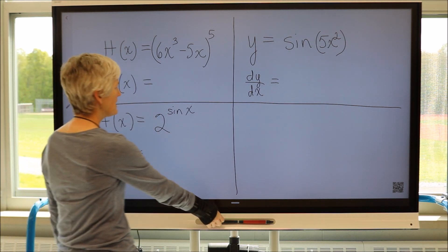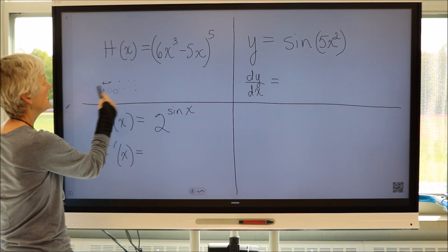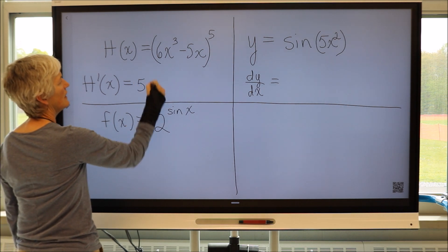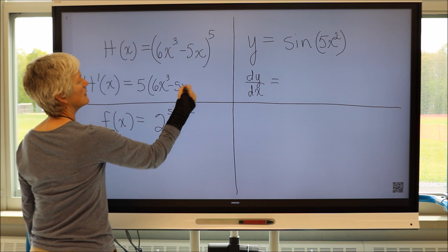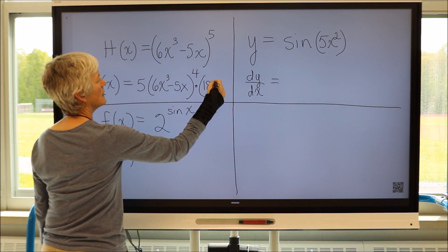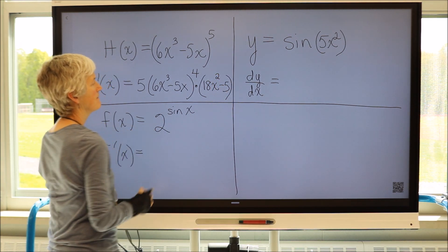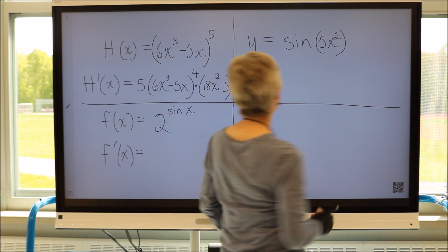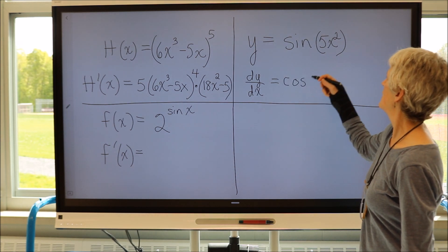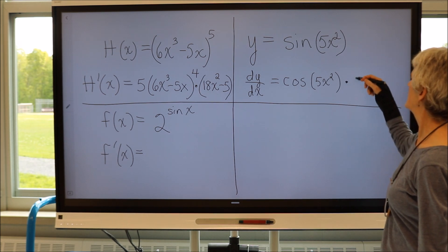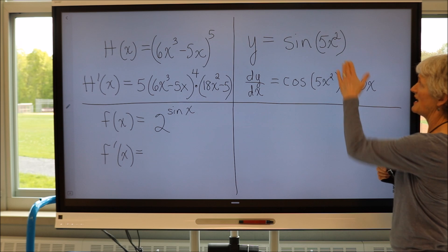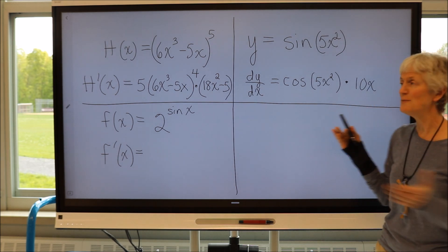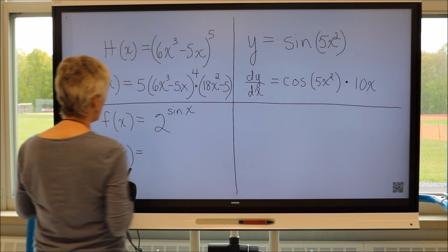Let's take the derivative. I'm going to take the derivative of each one of these functions, and I want you to try to figure out what I'm doing. So the derivative of h of x is this. There's the derivative of h of x. Let's try the derivative of this function. The derivative of sine of 5x squared is the cosine of 5x squared times 10x. What the heck am I doing? I'm doing the chain rule.